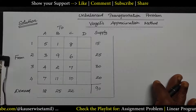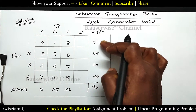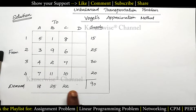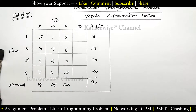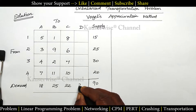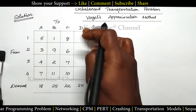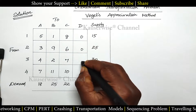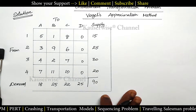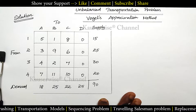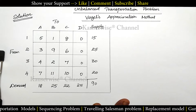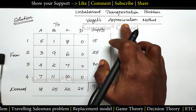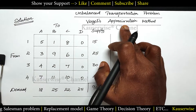Now let's see the solution. Supply total is 90 whereas demand total is 65. What is the difference? 25 is the difference. So enter 25 here for the dummy column. For the dummy column the cost will be 0, so assign 0. Now it will become a balanced transportation problem. After converting unbalanced into balanced, we can follow the simple procedure in order to apply Vogel's Approximation Method.